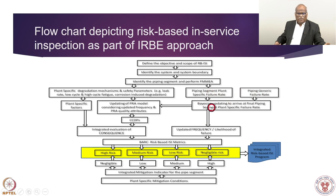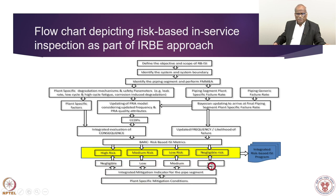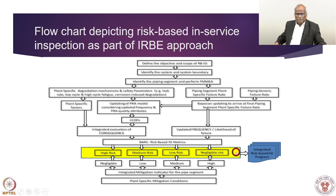From the frequency of failure we develop the BARC risk-based ISI program with four categories of risk ranking. A new component here is plant-specific mitigation conditions. If there are plant-specific mitigation conditions — categorized as negligible, low, medium, or high — they are imposed and a re-categorization of inspection points is done, finally yielding high risk, medium risk, low risk, and negligible risk. This modification was required for our reactor and produced an integrated risk-based ISI program.